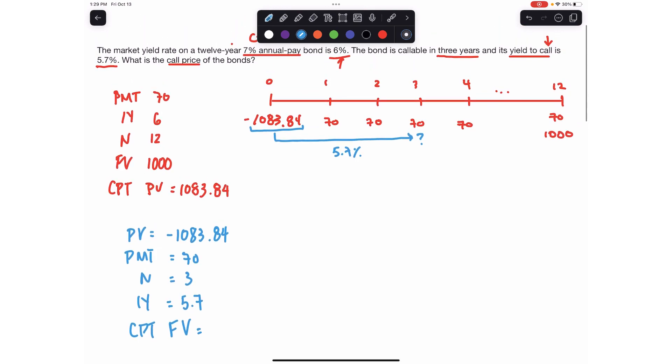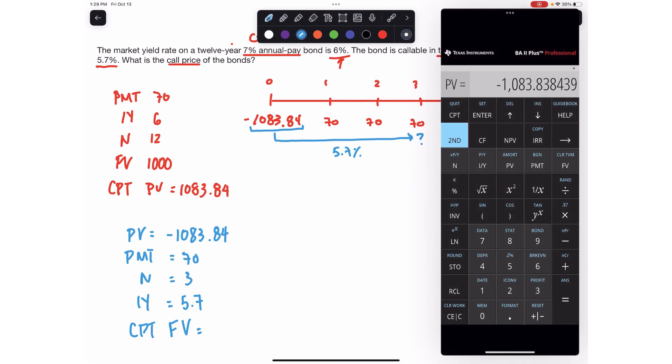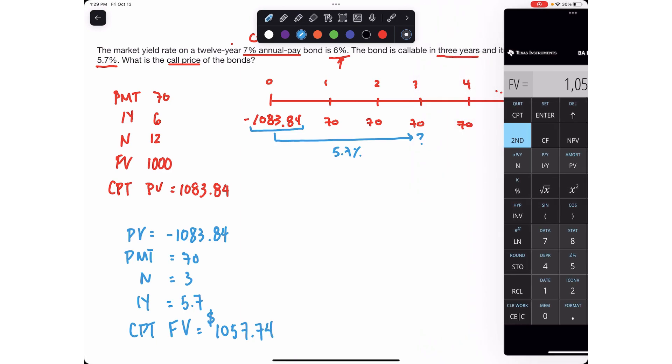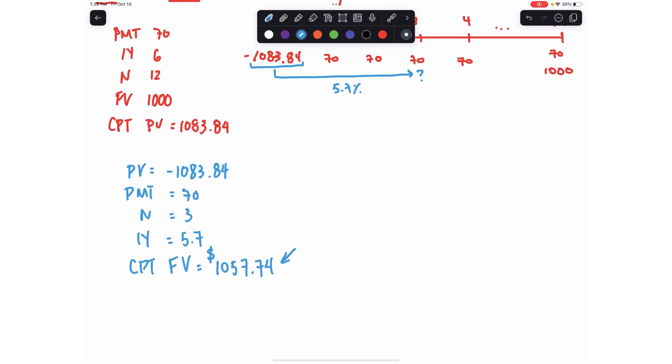And this essentially tells you, if you're earning 5.7% for the next three years on this present value, so this is the PV, I'll keep it, $70 is my PMT, 3N, 5.7IY, compute FV, $1,057. This is how much the bond is going to be worth when it's called, which we call the call price. This is the call price.